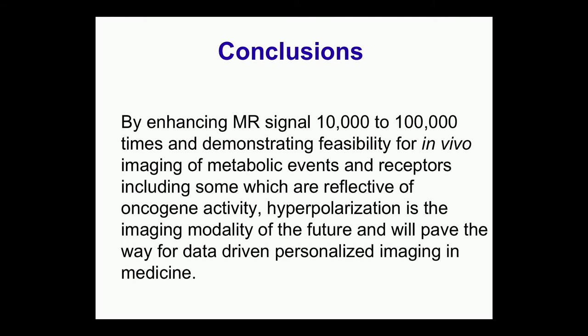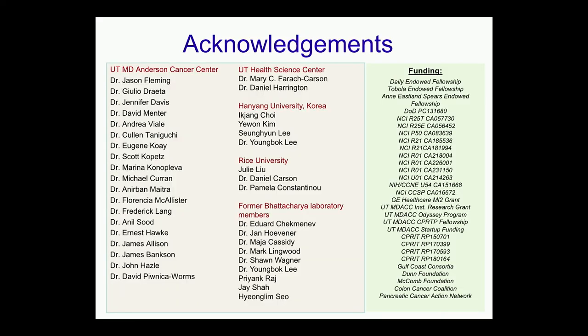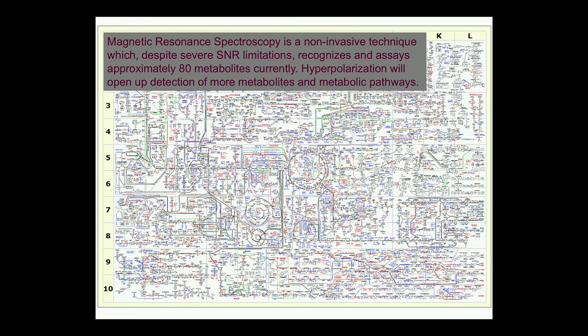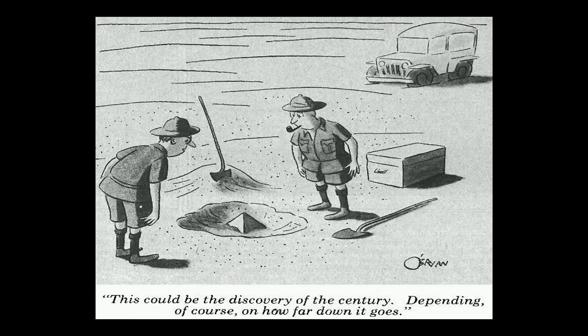The bottom line: by enhancing the MRI signal, we can now image metabolic events and the receptors of oncogene activity. This is an area where we are just barely scratching the surface, where data science and big data can play a big role. Right now, with all available techniques, we can only track about 80 metabolites. With hyperpolarization and big data, there is a big emphasis on real-time metabolic profiling in cancer patients and other diseases where metabolism is dysregulated. We are scratching the top of the pyramid — we'll see how far it goes. Thank you for your attention.